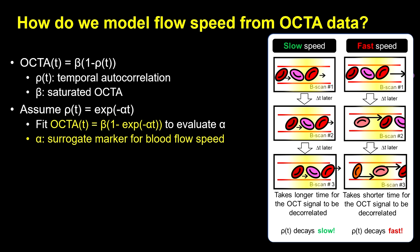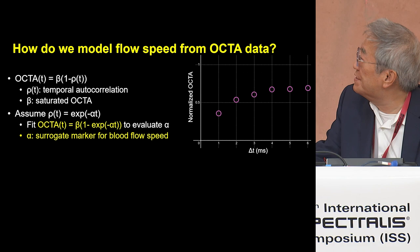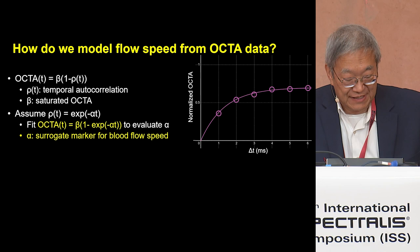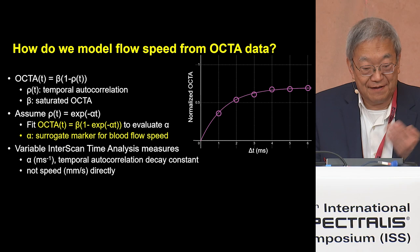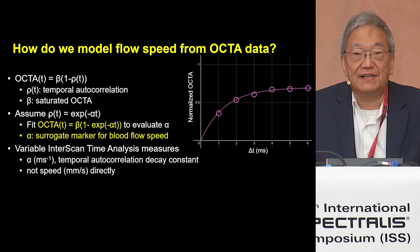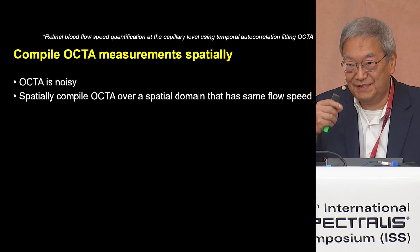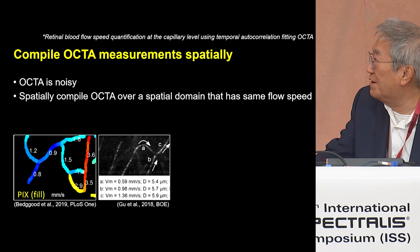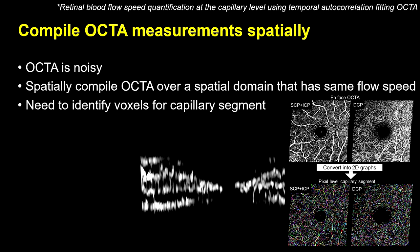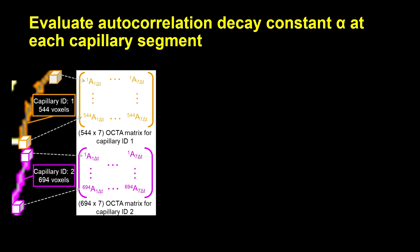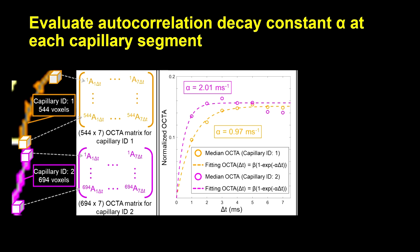The decorrelation is a measure of flow. We can do sequential measurements with multiple scans and fit this to an exponential model. The exponential parameter alpha is a surrogate marker for blood flow — it's not a direct measurement, but it correlates with blood flow speed. These measurements are inherently very noisy, so we need to average over regions. Adaptive optics has shown that capillary segments have relatively constant flows, so if we can identify the capillary segments, we can average over them — looking at enlargements, identifying them, and extracting the decorrelation parameter over each capillary segment.